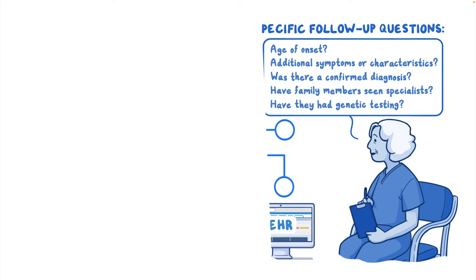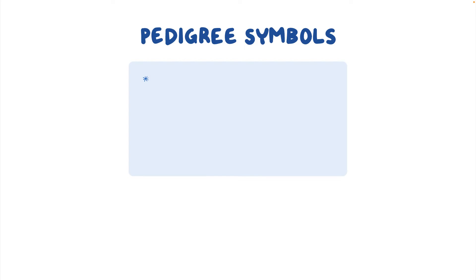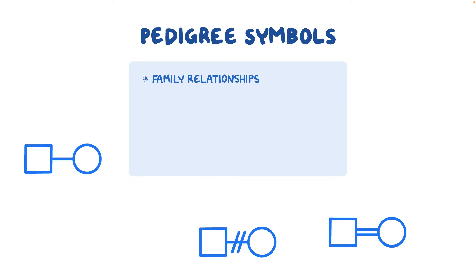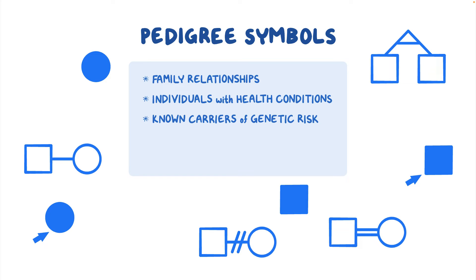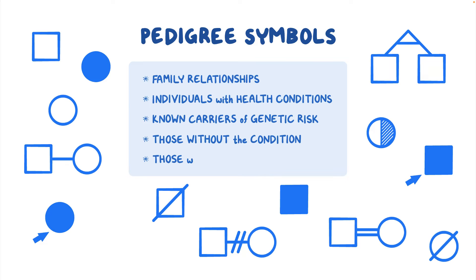Let's explore the symbols used in a pedigree. Pedigree symbols represent the relationships in a family and the individuals with a particular health condition, as well as those who are known carriers of genetic risk for the condition, those without the condition, and those whose status is unknown.